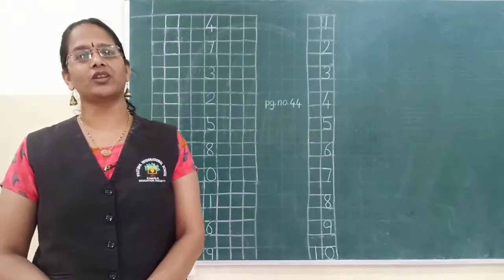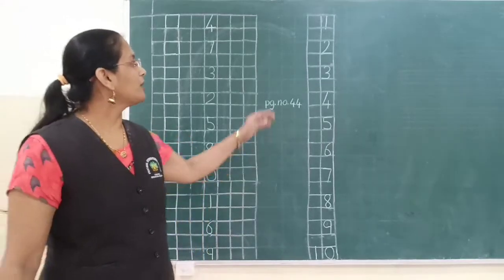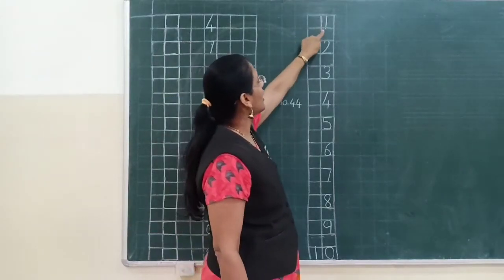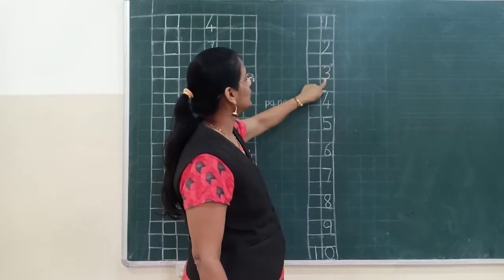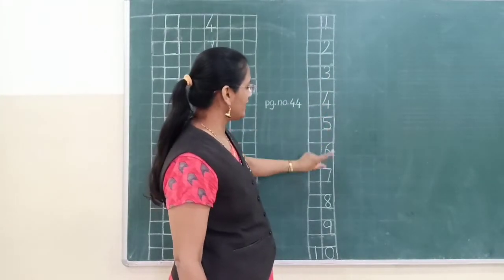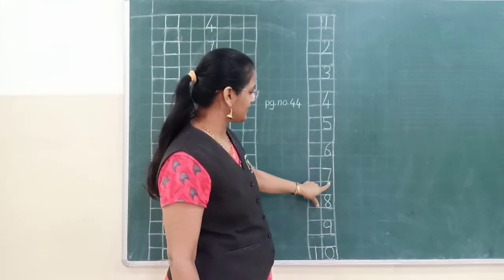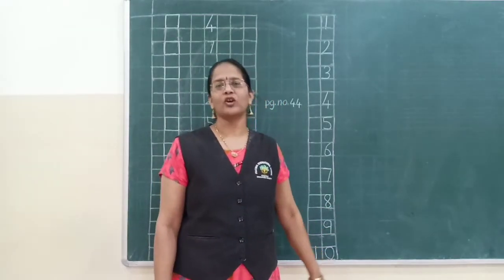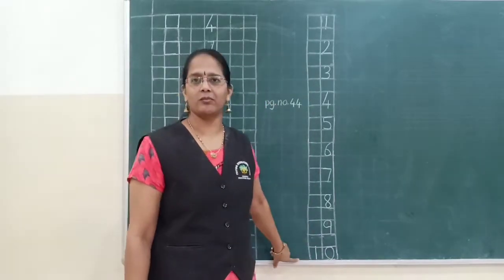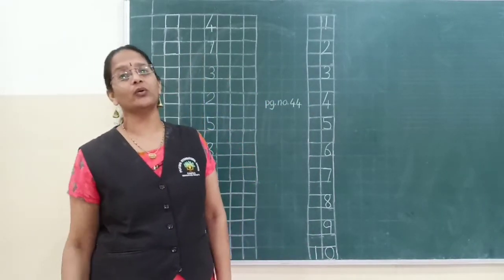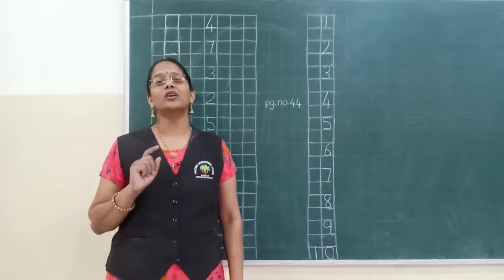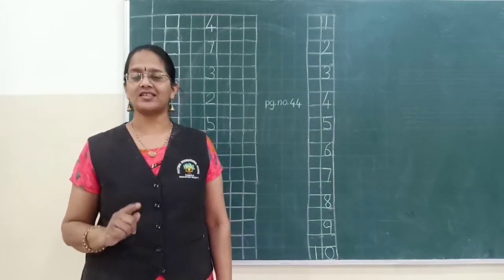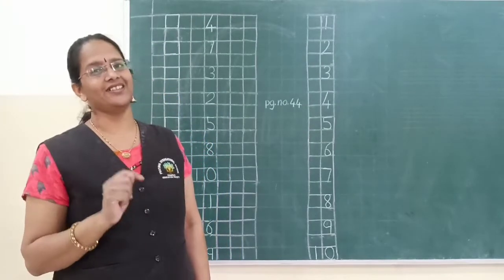So before number kya hota hai? See, humne numbers seekhe hain. Aur numbers hum log kaise likhte hain? 1, 2, 3, 4, 5, 6, 7, 8, 9 and 10. Hum log isi sequence mein hamesha number likhte hain. So I am asking you orally — you are to tell me the numbers in this sequence: 1, 2, 3, 4, 5, 6, 7, 8, 9 and 10. In this way.